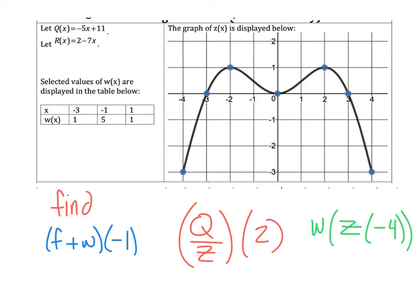So let's try a couple of these. First off, we're going to find f plus w of negative 1. And to do that, I'm going to think about this as, okay, I've got to find f of negative 1. And I don't have an f here. I think this was supposed to be some other functions. Let's call this q, because I definitely have a function for q. So we're going to find q of negative 1. And that's going to be negative 5 times negative 1 is 5, plus 11 is 16. And to that, I'm going to add w of negative 1. W of negative 1 is going to be 5. 16 plus 5 is 21.